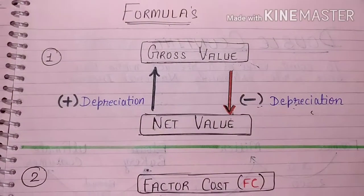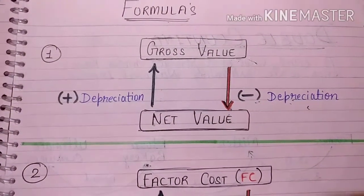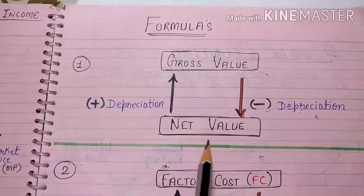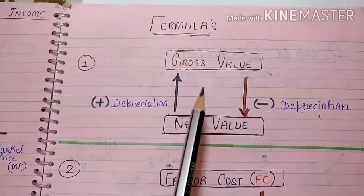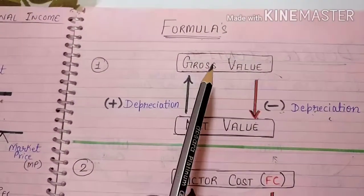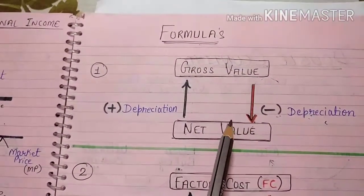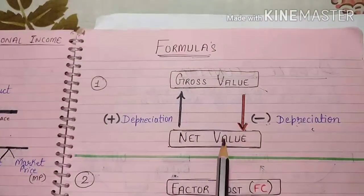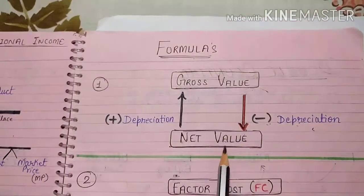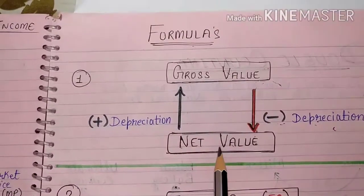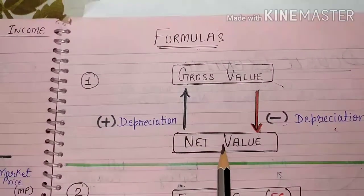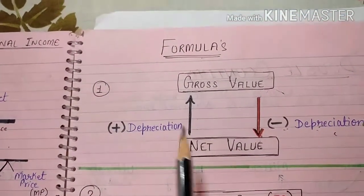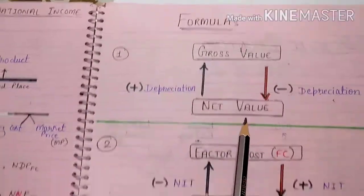So till now we have learned about our three basic formulas. The first one is gross value and net value: if we are having gross value and we have to convert to net value, we have to subtract depreciation. In the other case, if we are having net value and we have to convert it into gross value, we have to add depreciation.